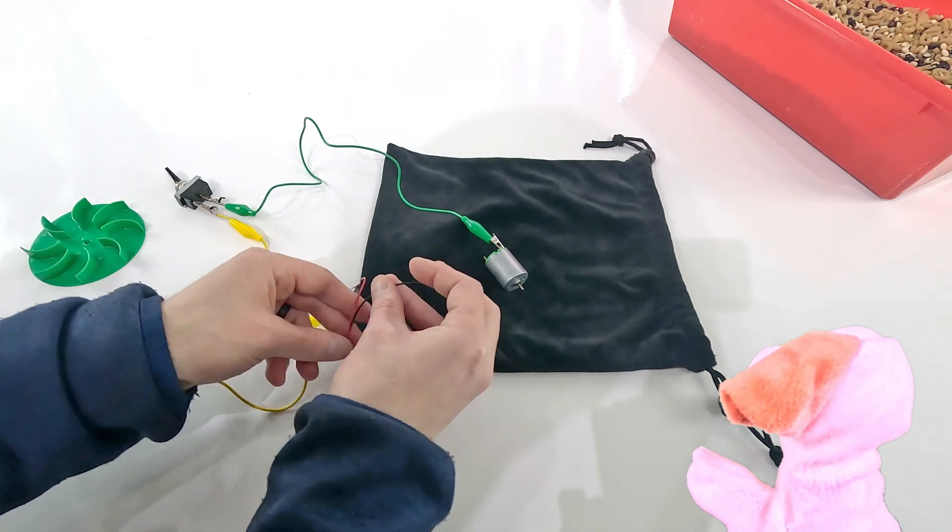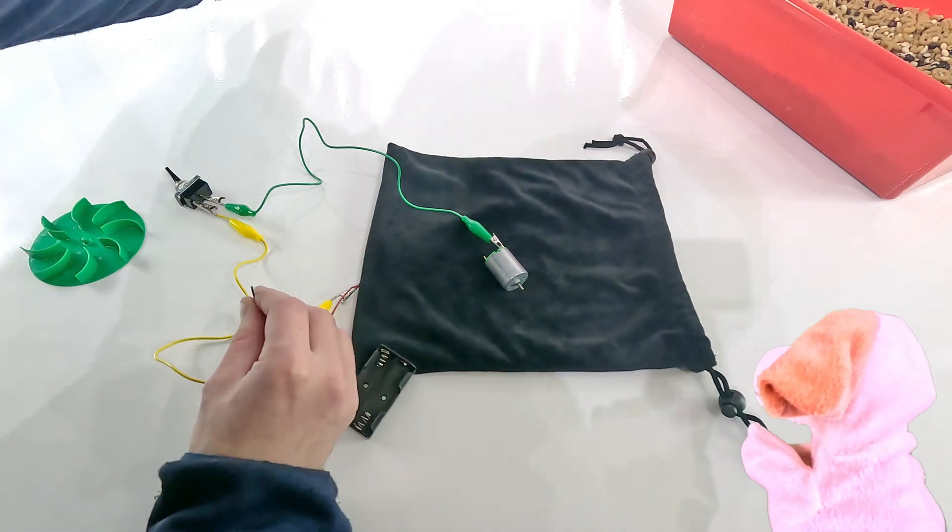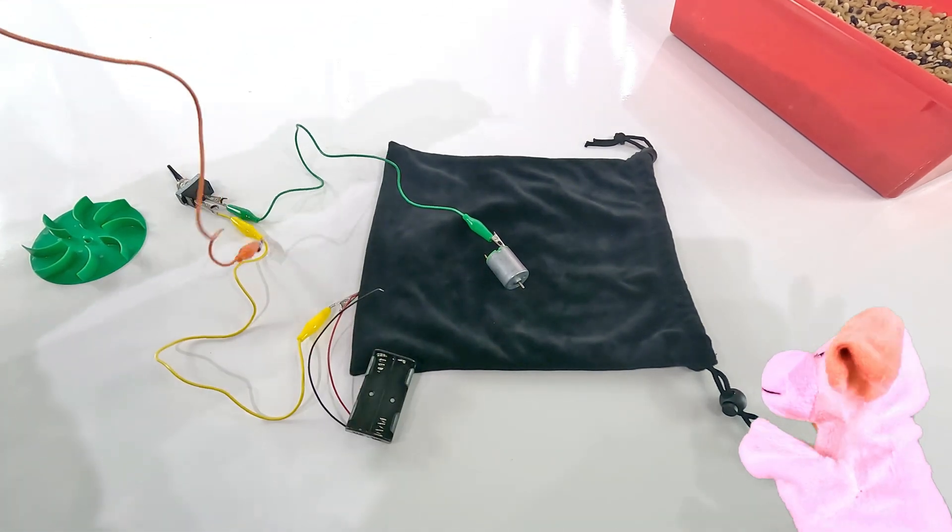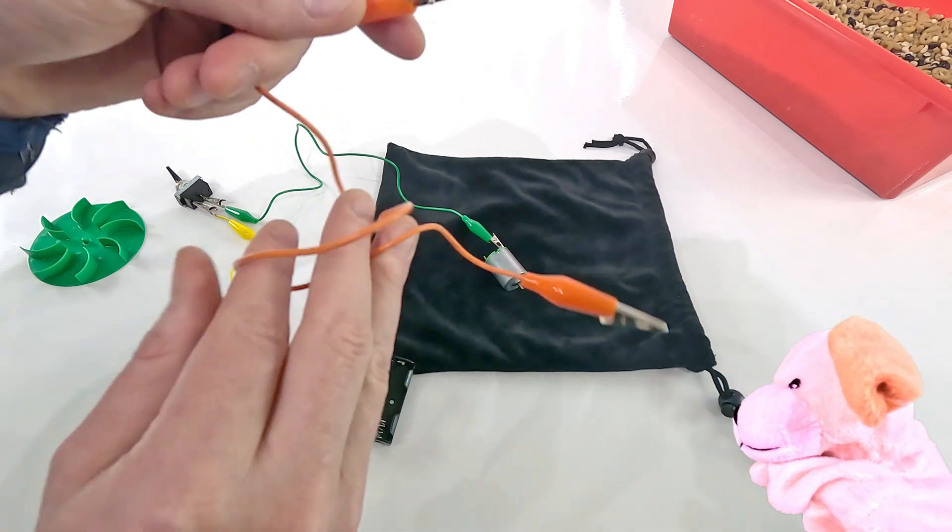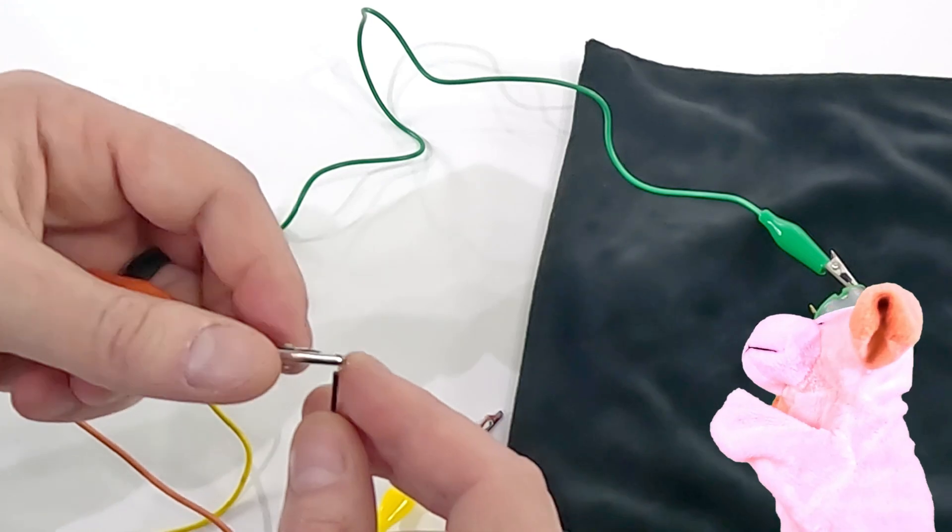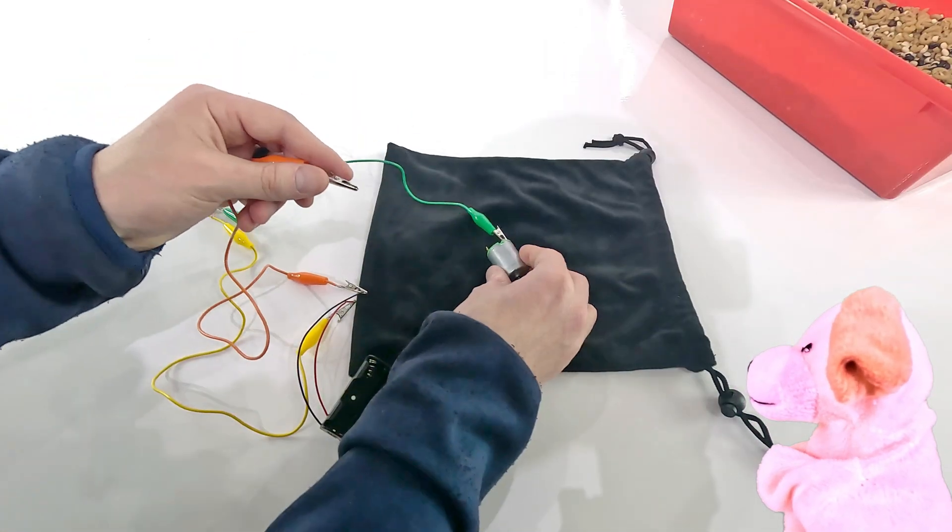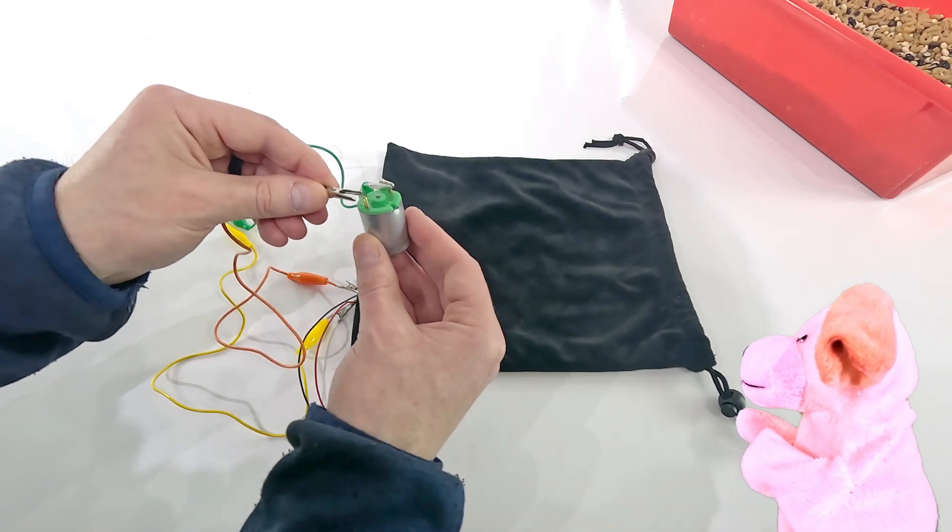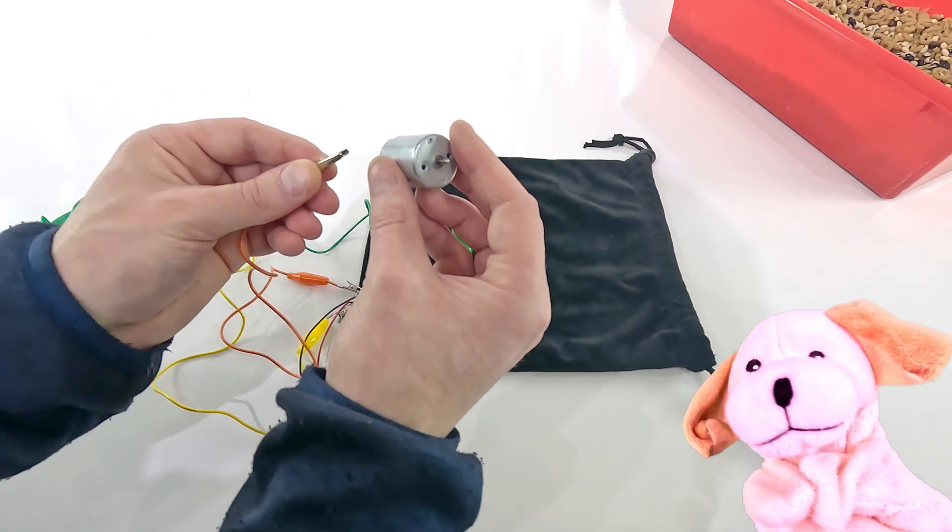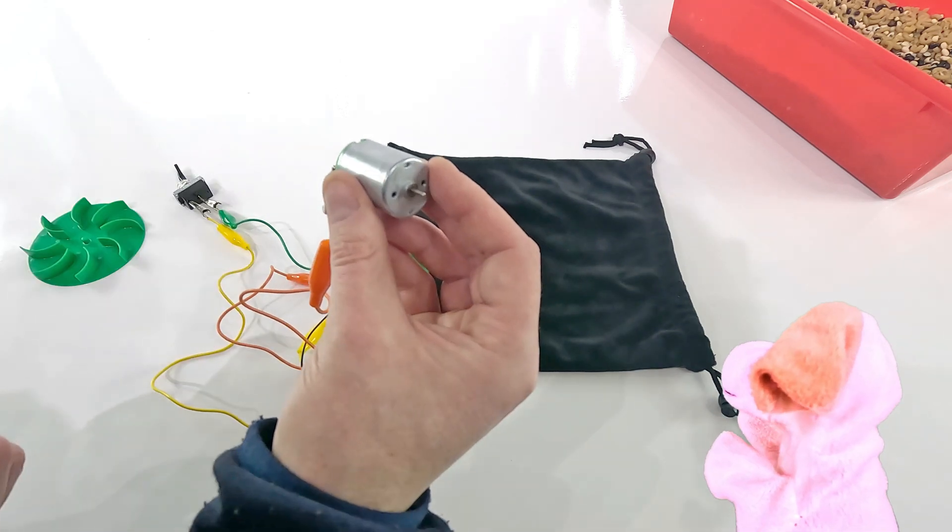Our last step is to use this orange wire here to connect our battery holder all the way back to the hobby motor. That's where this whole thing started from. So I get that clamp on the other wire and then connect the motor.